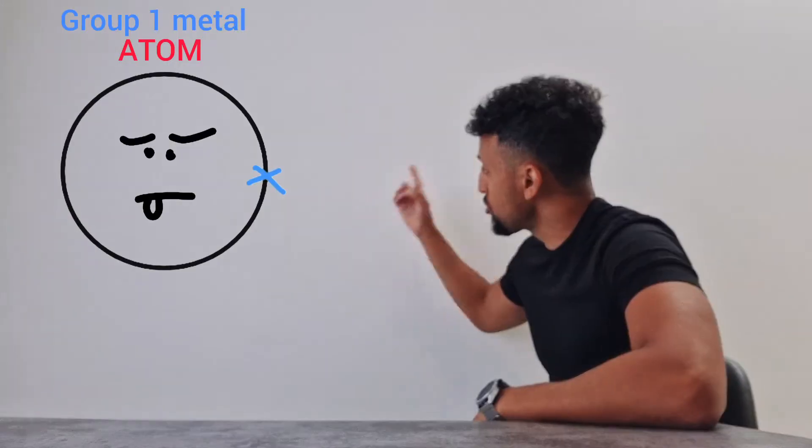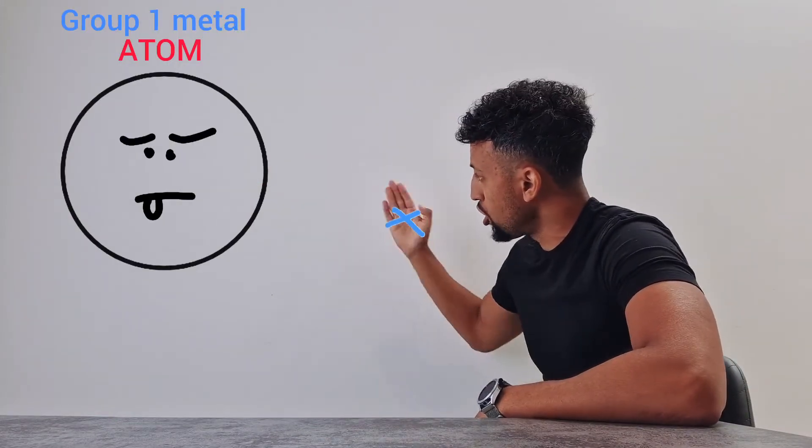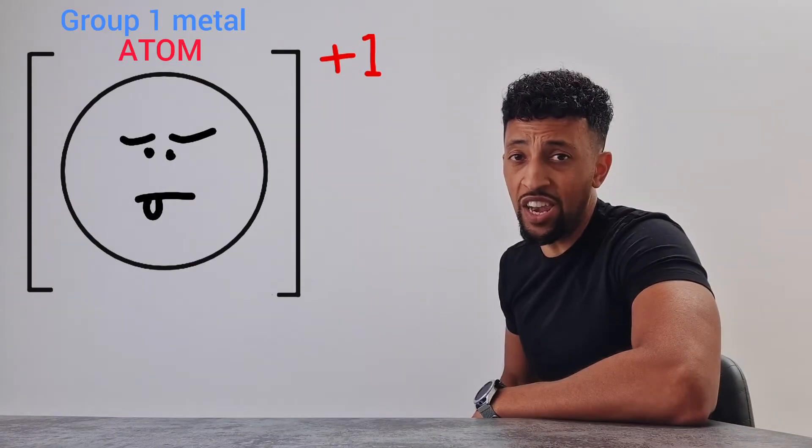In group 1, that really ain't that long. All it's got to do is lose one electron. Charges change 0 to plus 1. It's no longer an atom, it's an ion. Group 7 atoms don't do the same.